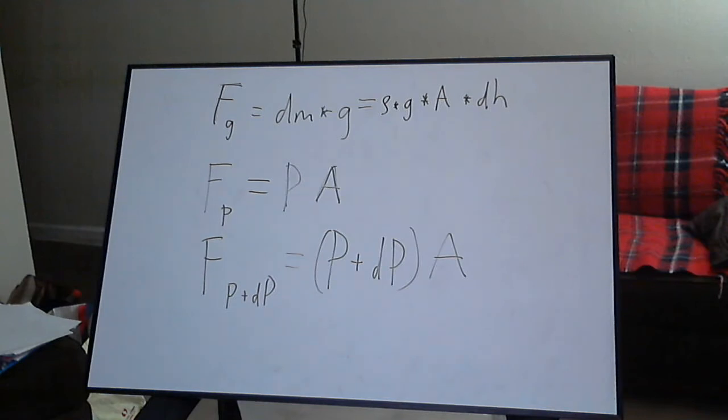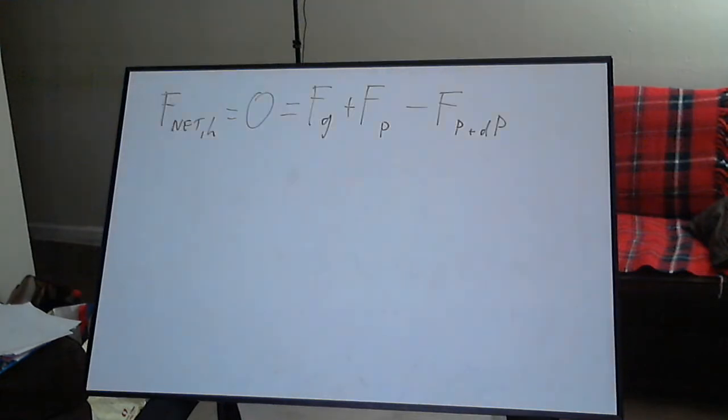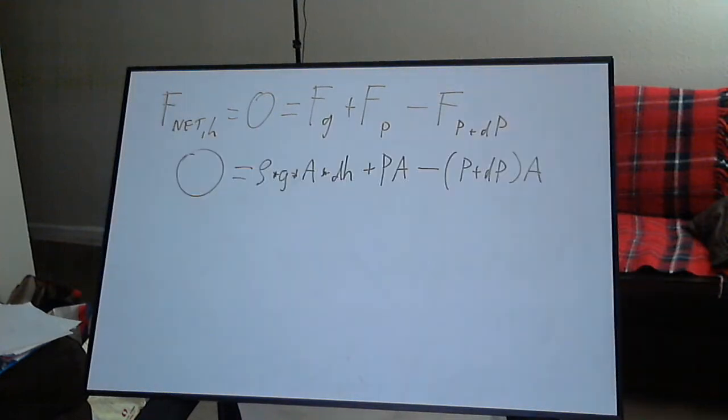Let's combine this with our known forces that we will now substitute in from our free body diagram. Write out the forces acting on the object, then substitute in our previously derived expressions. We can do some simplifications here. Finally, let's rearrange for the differential pressure.